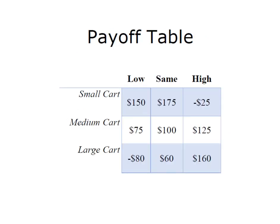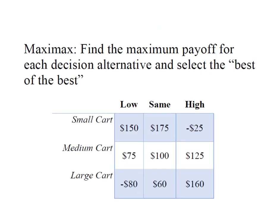So here's my payoff table. For each of my decision alternatives and each state of nature, I have a payoff. For instance, if I open a small cart and tourist traffic is lower than last year, my payoff will be $150. Under a maxi max approach, what we're going to do is isolate the maximum payoff under each decision alternative, and then select the decision alternative that produces the highest of the maximum payoffs.